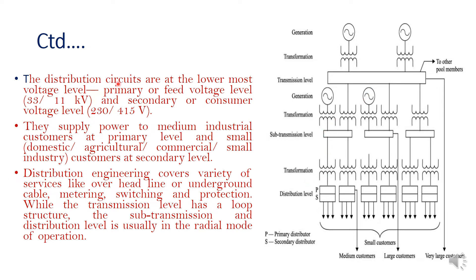The distribution circuits are the lowermost voltage level. Primary or feeder voltage level is 33 to 11 kV — that is the primary distribution. Secondary distribution level voltage is 230 or 415 volts: 230 V is the single-phase supply and 415 V is the three-phase supply. They supply power to medium industrial consumers or small domestic, agricultural, commercial, or small industry consumers at the secondary level. Distribution engineering covers a variety of services like overhead line, underground cable, metering, switching, and protection. While the transmission level has a loop structure, the sub-transmission and distribution level is usually in the radial mode of operation.